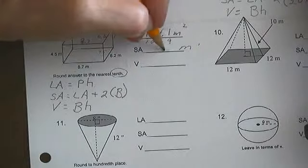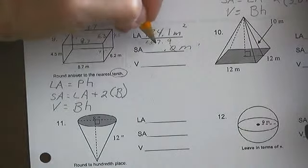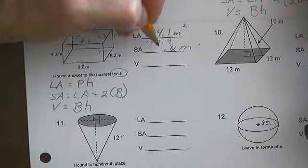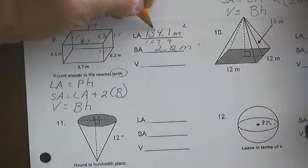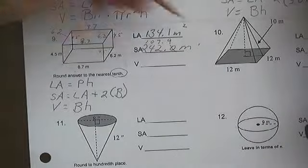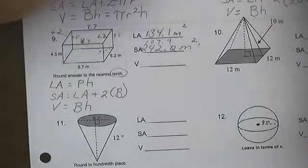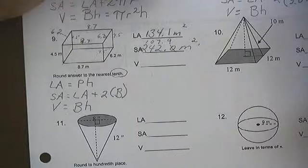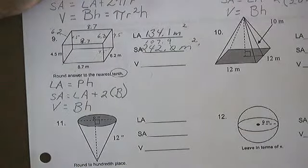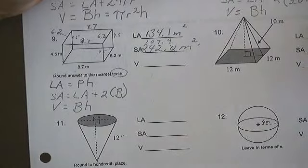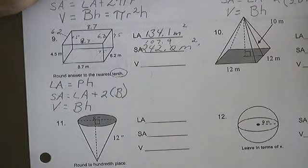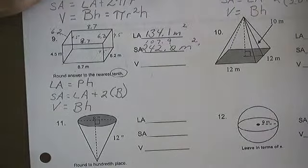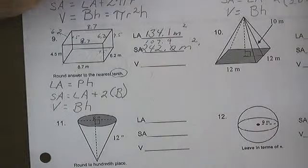That's going to give me a total surface area. 4 and 7 is 11 and 1 is 12 carry 1, 242 square meters. And my volume is 53.94 times my height, 242.7.